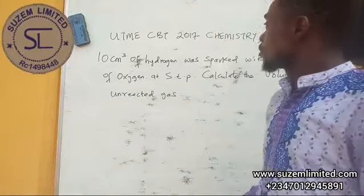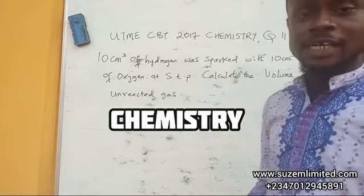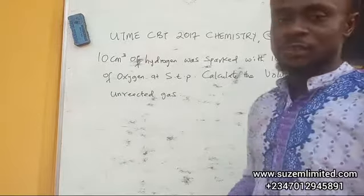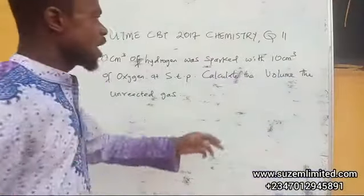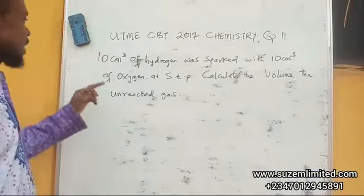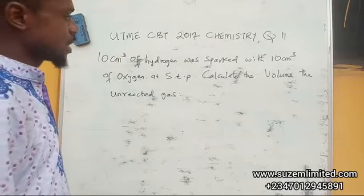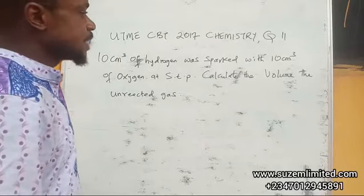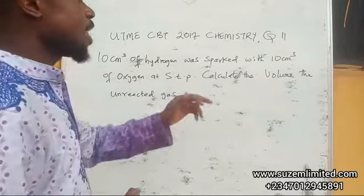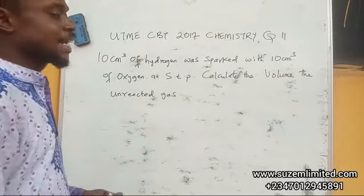Look at this question again. Still under UTME-CBT 2017 chemistry, but this time around we have question 11 and the question says 10 cm³ of hydrogen was sparked with 10 cm³ of oxygen at STP. Calculate the volume of the unreacted gas.